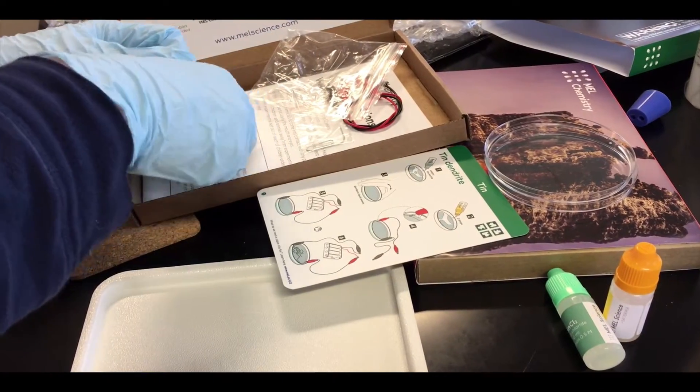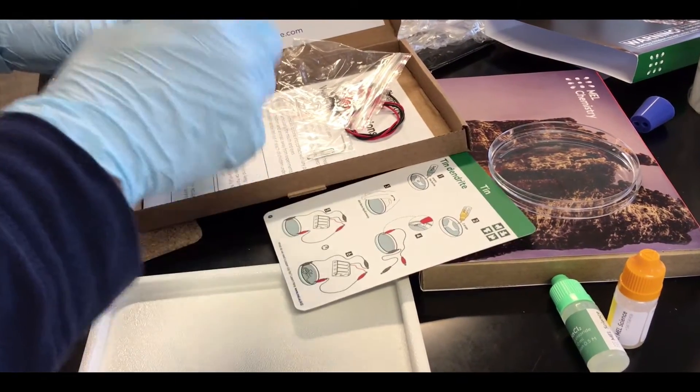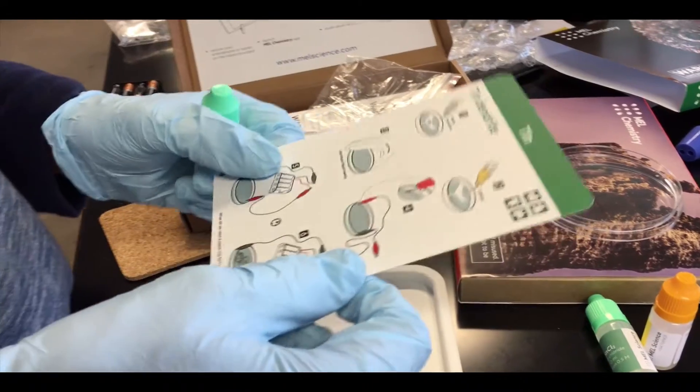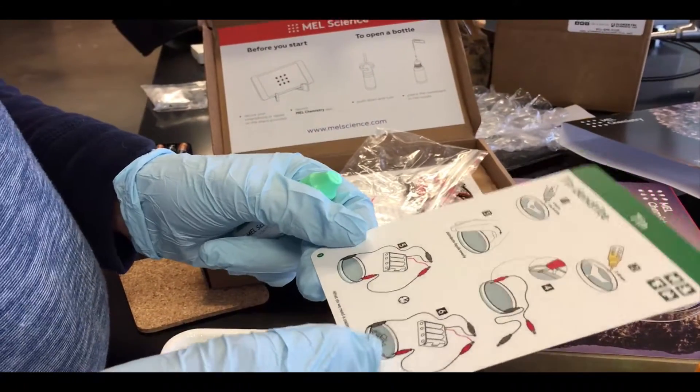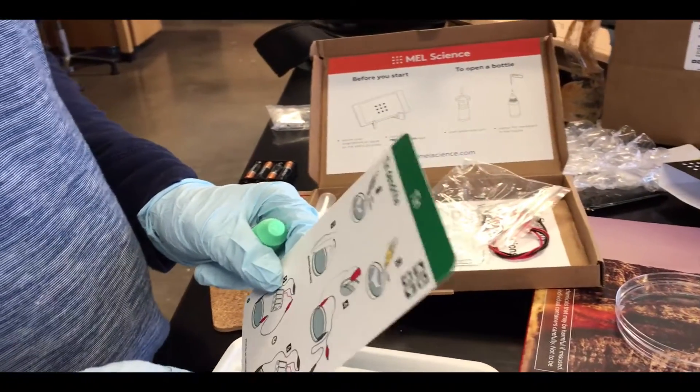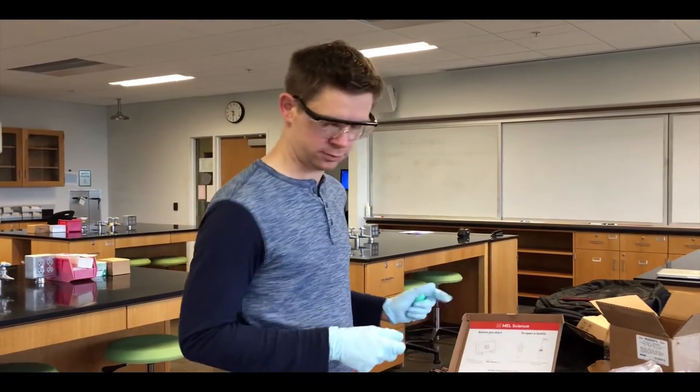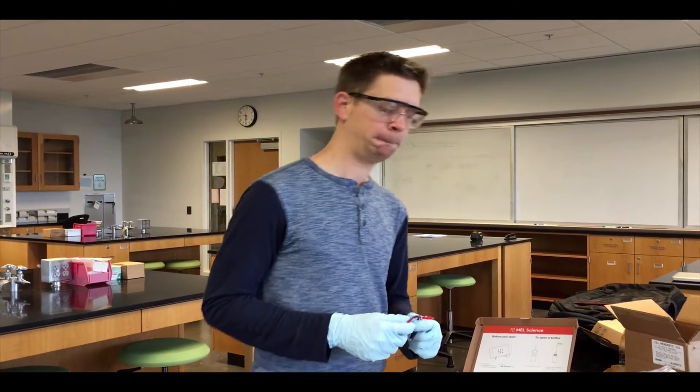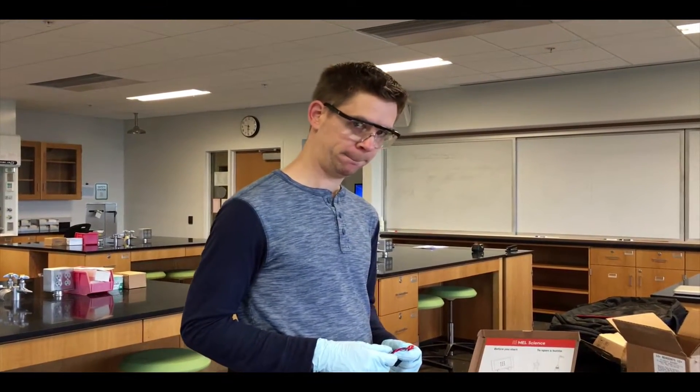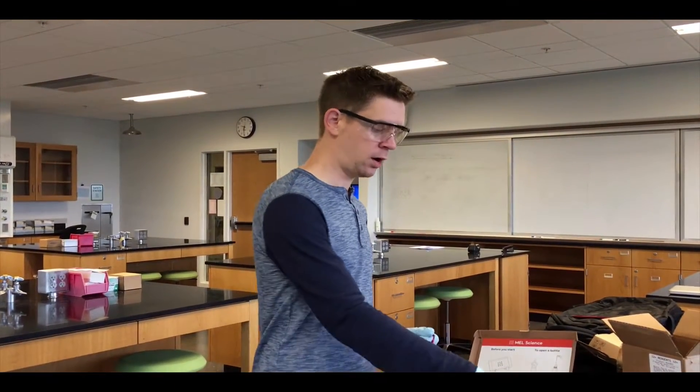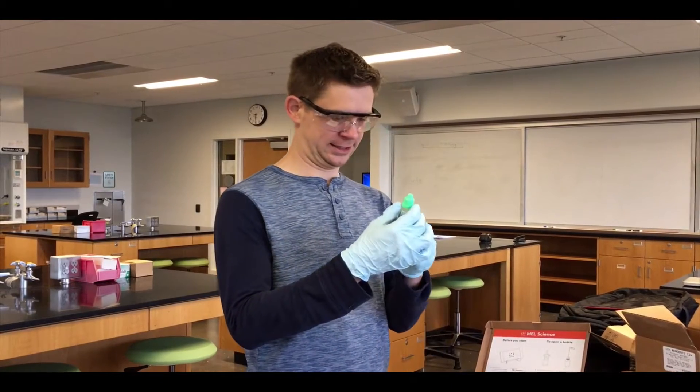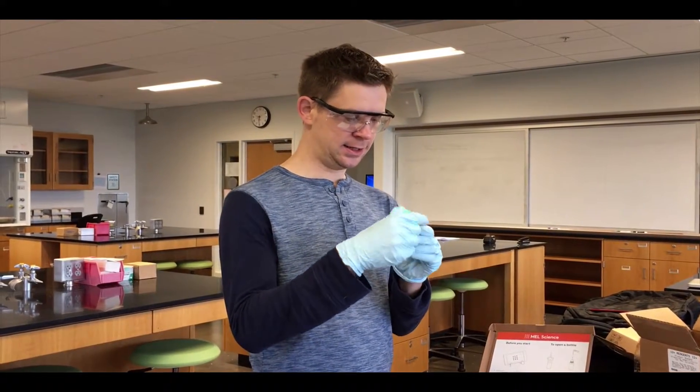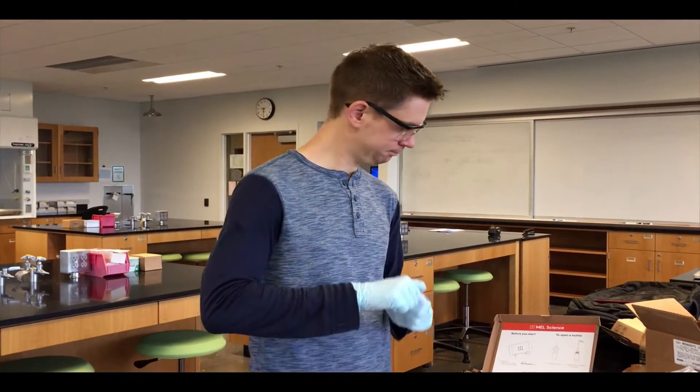So what are we doing now? We are now doing the tin dendrite experiment which is going to grow little strings of tin in a petri dish. In this kind of reaction in general, the products of the reaction have more free energy than the reactants, so you need energy to make that reaction happen.